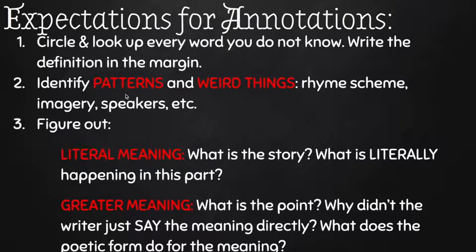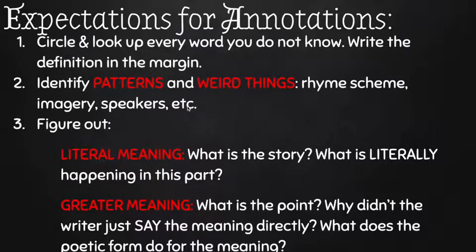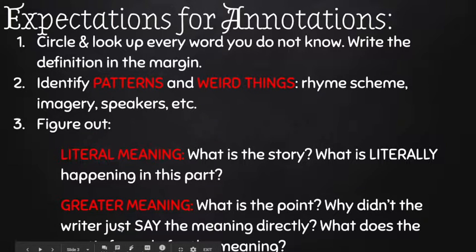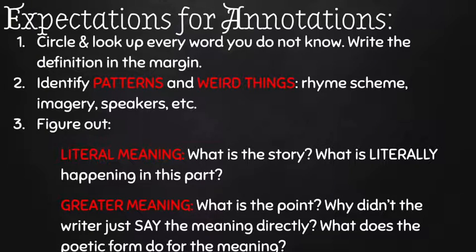Number two: identify patterns and weird things — rhyme scheme, imagery, speakers, etc. And three: figure out the literal meaning. What's literally happening? What is the story? That's important to this poem. Then figure out the greater meaning. What is the point? Why didn't the writer just say the meaning directly? What does the poetic form do for the meaning?